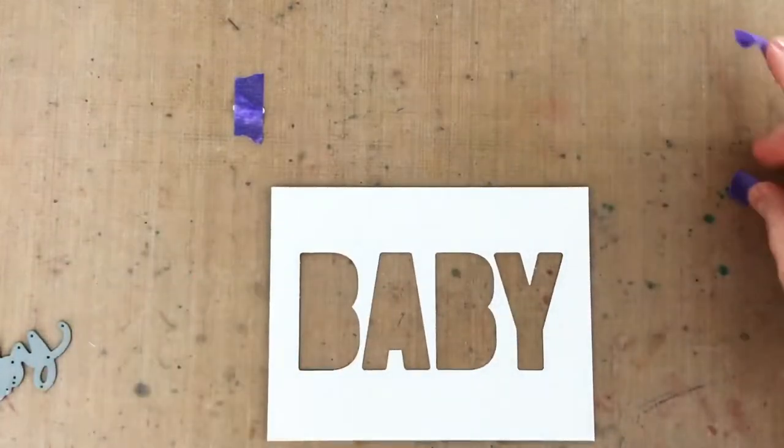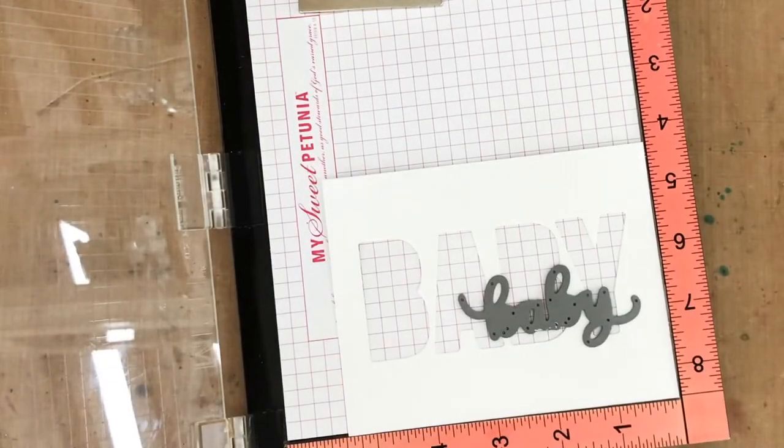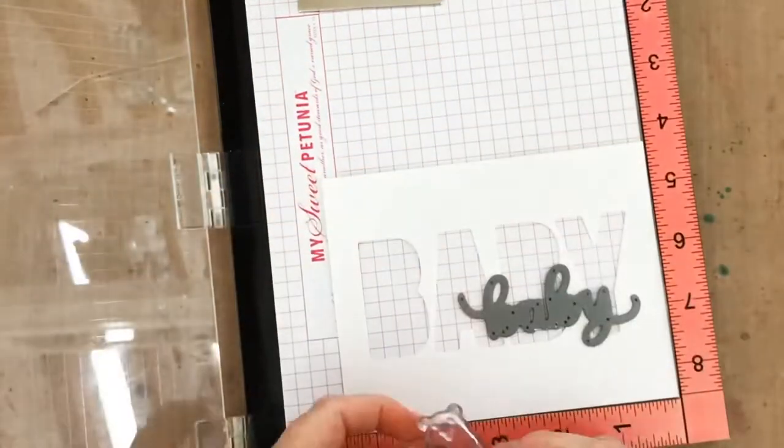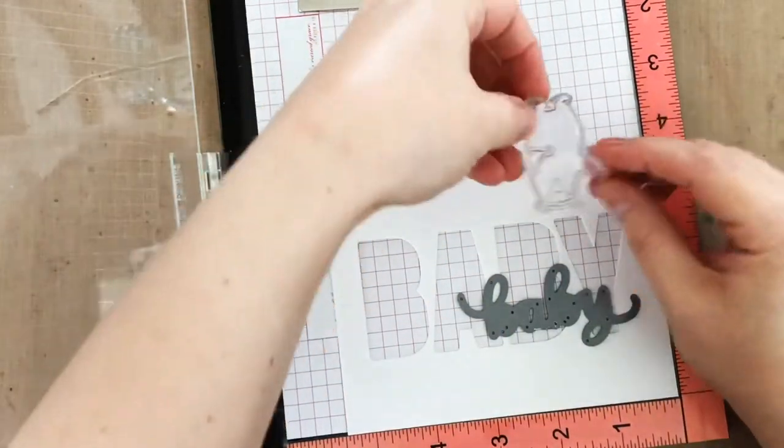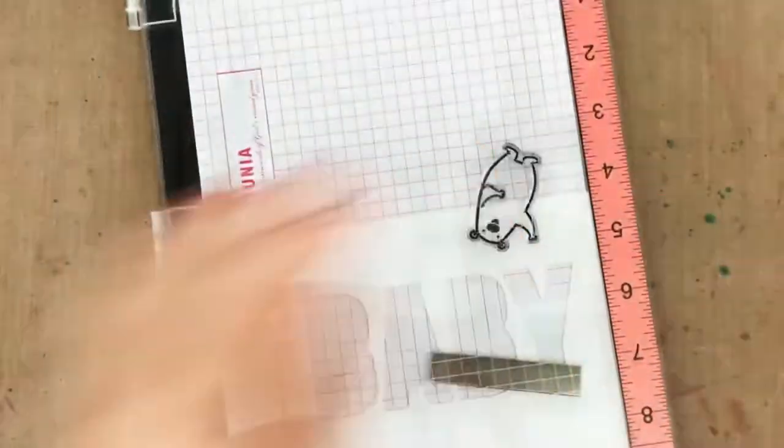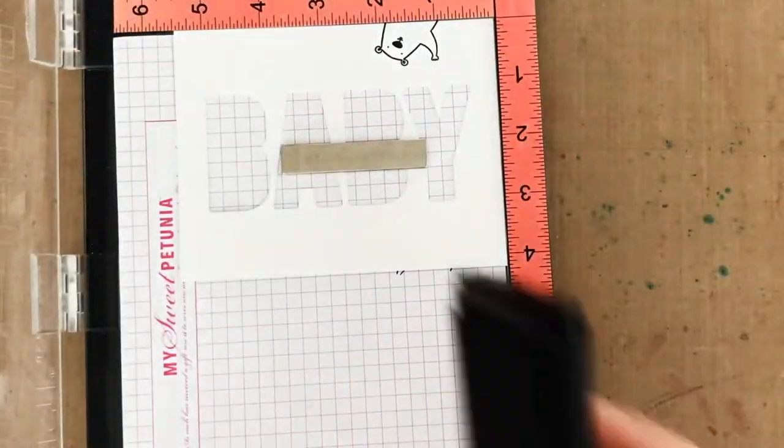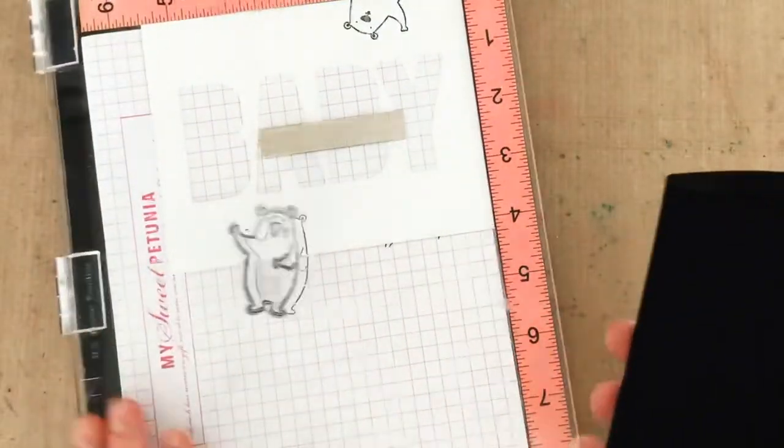Then I pop my die cut panel in my MISTI so I can stamp the baby bears, but I also know that I'm going to add the second baby word later on, so I'm borrowing the die to use it for spacing to make sure I get everything spaced where it needs to be and no baby bears in the way of that word. Then I can close my MISTI, pick up that bear stamp, ink it up and stamp, and then I can move the panel and add my second baby bear.